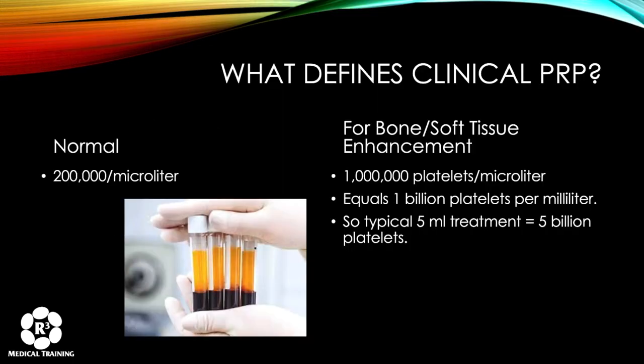When talking about clinical PRP, normal blood has 200,000 platelets per microliter on average. Studies looking at what it takes for bone and soft tissue healing enhancement show you need to increase that to a million platelets per microliter. Doing the math, that's a billion platelets per milliliter. So in a typical five-milliliter treatment, that would be five billion platelets.